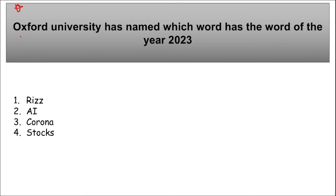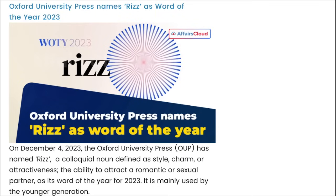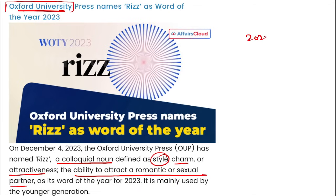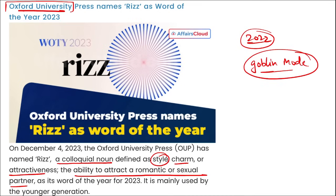Oxford University के द्वारा किस word को Word of the Year 2023 declare किया गया? वो है 'Rizz' — mark करके चलेंगे। Rizz एक colloquial noun है जिसका meaning रहेगा style, charm, stylish होना, attractiveness होना, and the ability to attract a romantic or sexual partner। Oxford University ने इसको Word of the Year 2023 घोषित किया। अगर 2022 की बात करें, तो Oxford University ने 'Goblin Mode' को Word of the Year घोषित किया था।